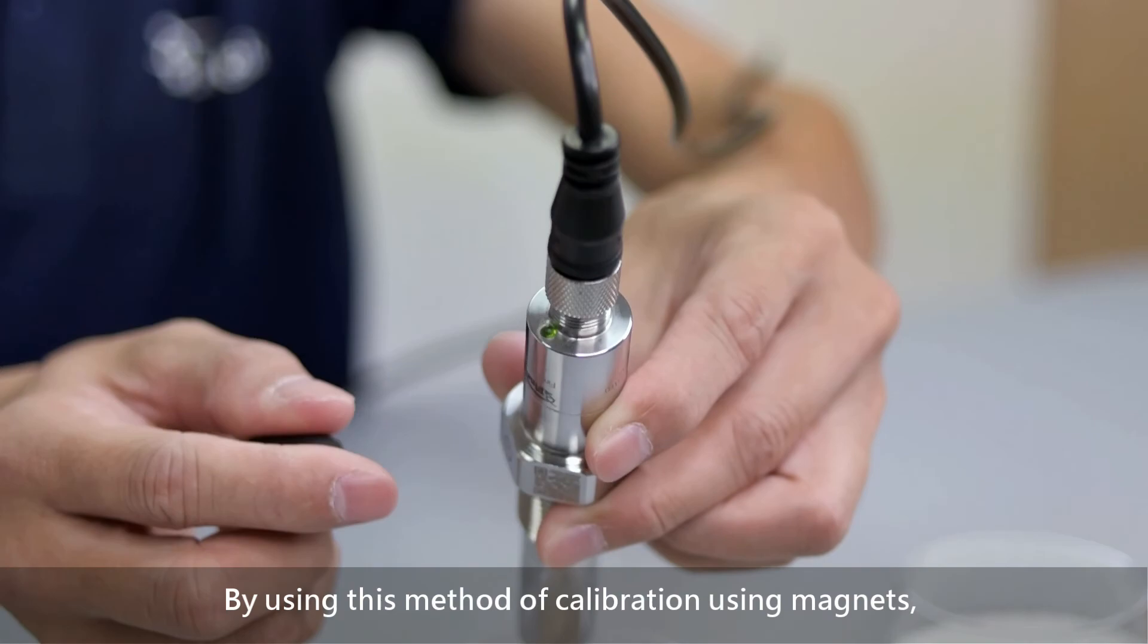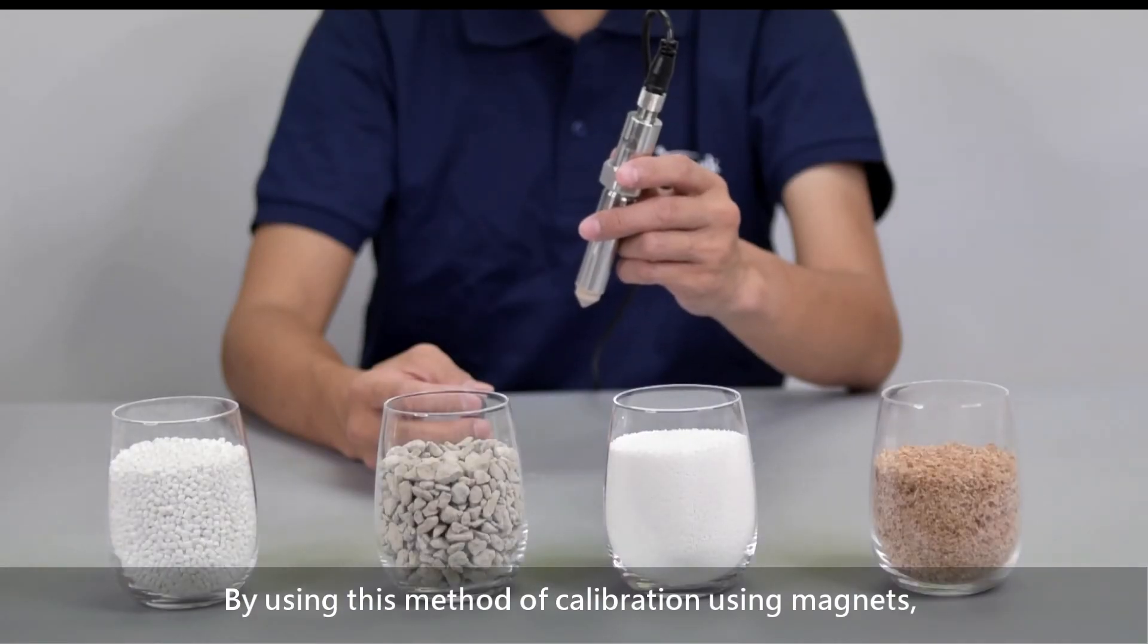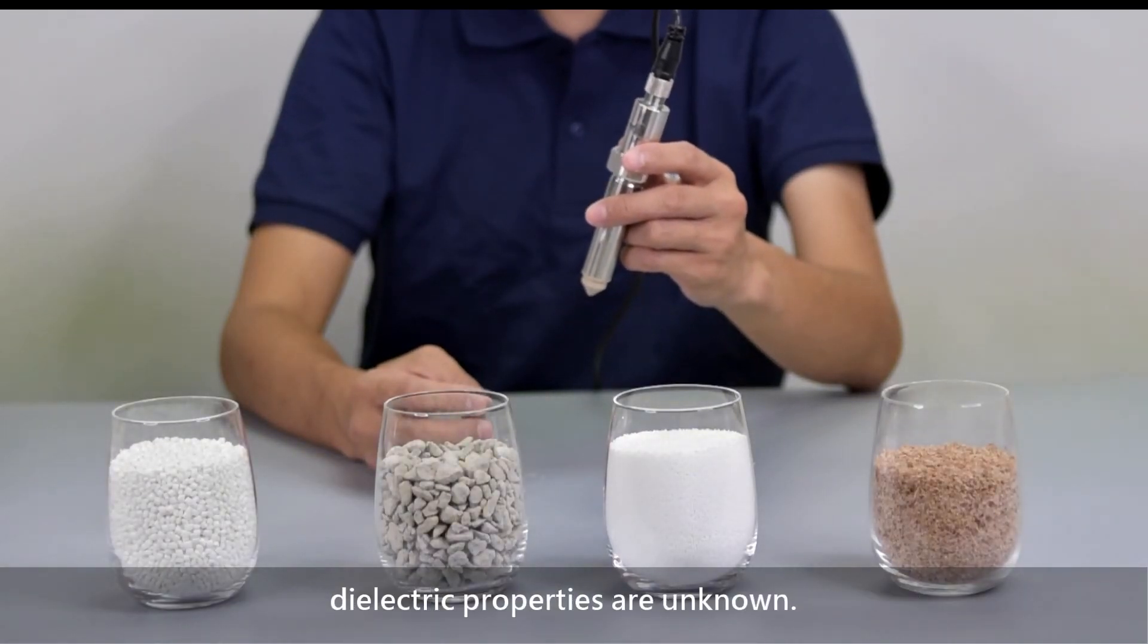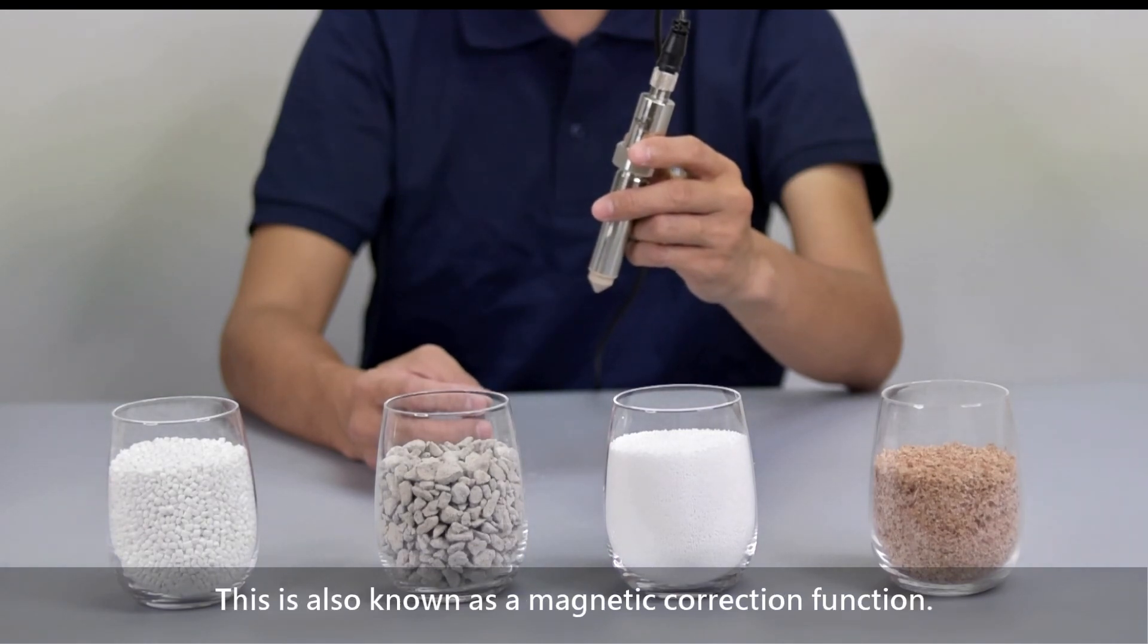By using this method of calibration using magnets, we can make adjustments even when the material's dielectric properties are unknown. This is also known as a magnetic correction function.